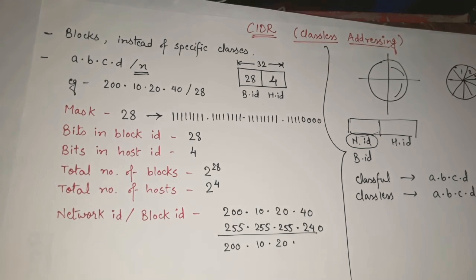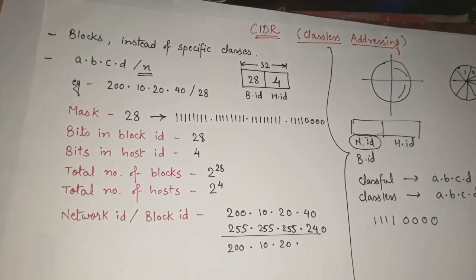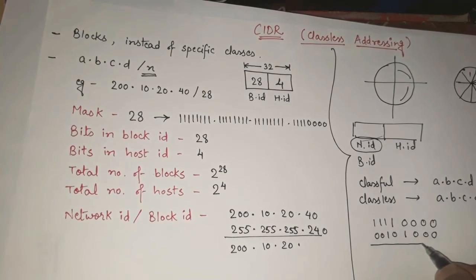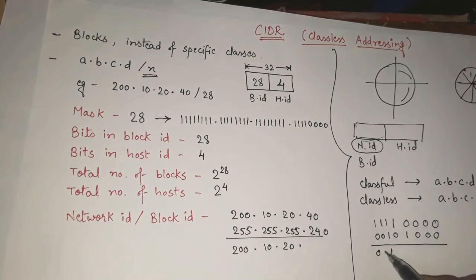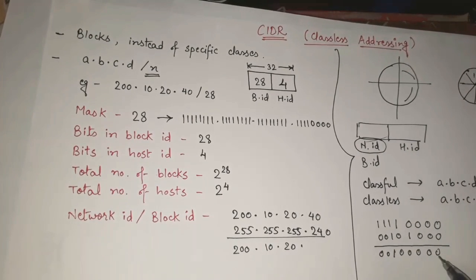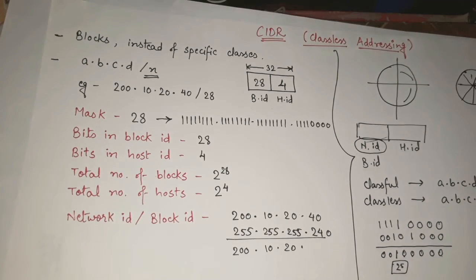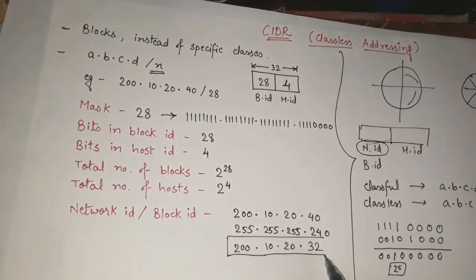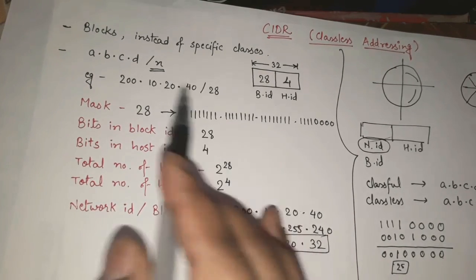So the result of the AND operation gives us 200.10.20.32, which is the network ID or block ID. This represents the network in which the IP address 200.10.20.40 is present.